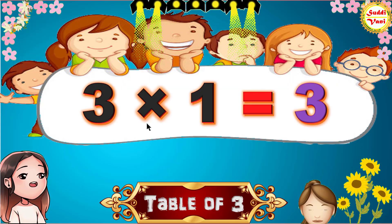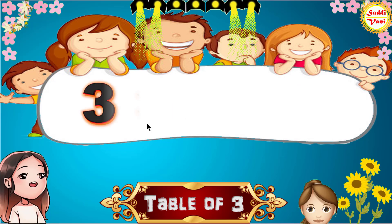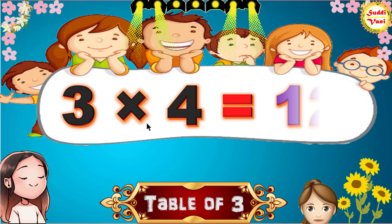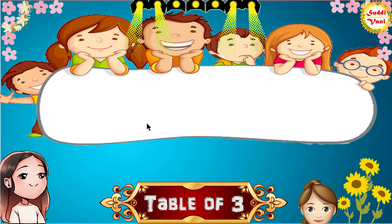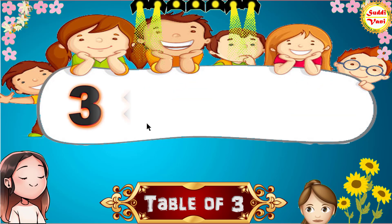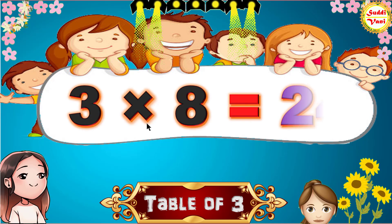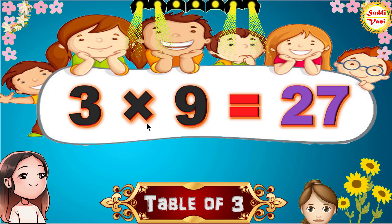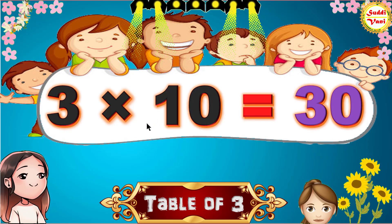3 times 1 is 3, 3 times 2 is 6, 3 times 3 is 9, 3 times 4 is 12, 3 times 5 is 15, 3 times 6 is 18, 3 times 7 is 21, 3 times 8 is 24, 3 times 9 is 27, 3 times 10 is 30.